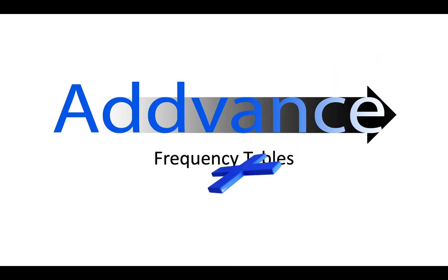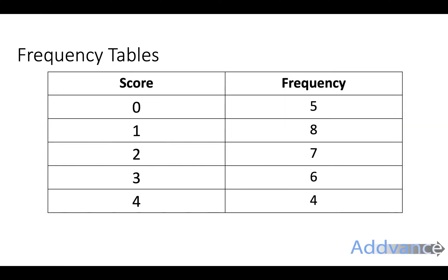Hello everybody, welcome back. Today we talk about frequency tables. I'm going to work out how to know the mean, median, and mode from a frequency table. Here's an example of a frequency table where these are the scores people scored in a competition. So five people scored zero.